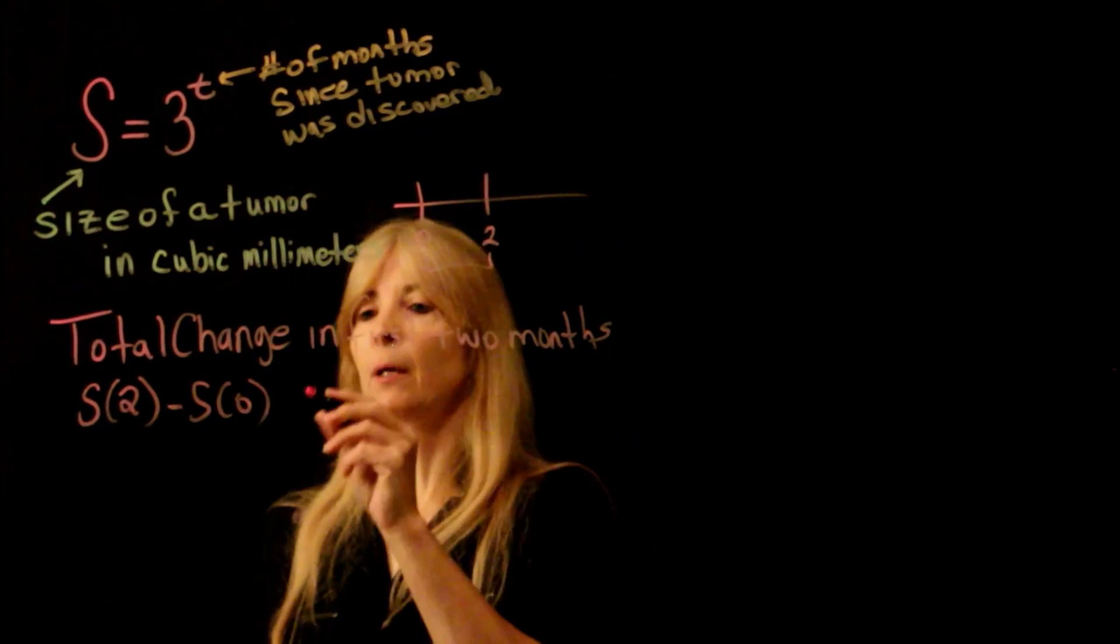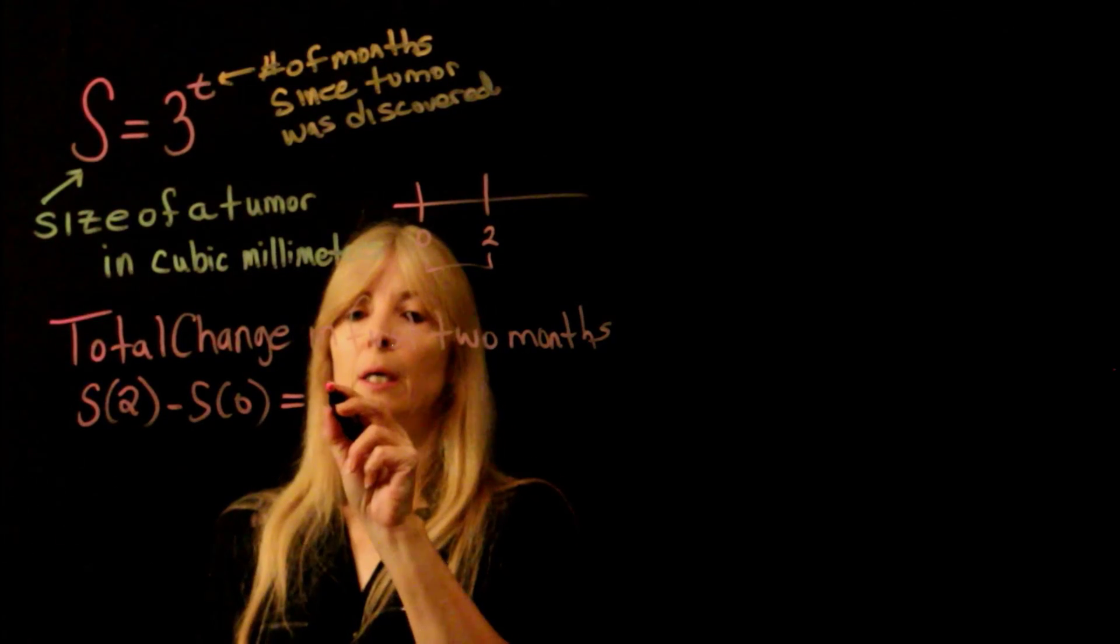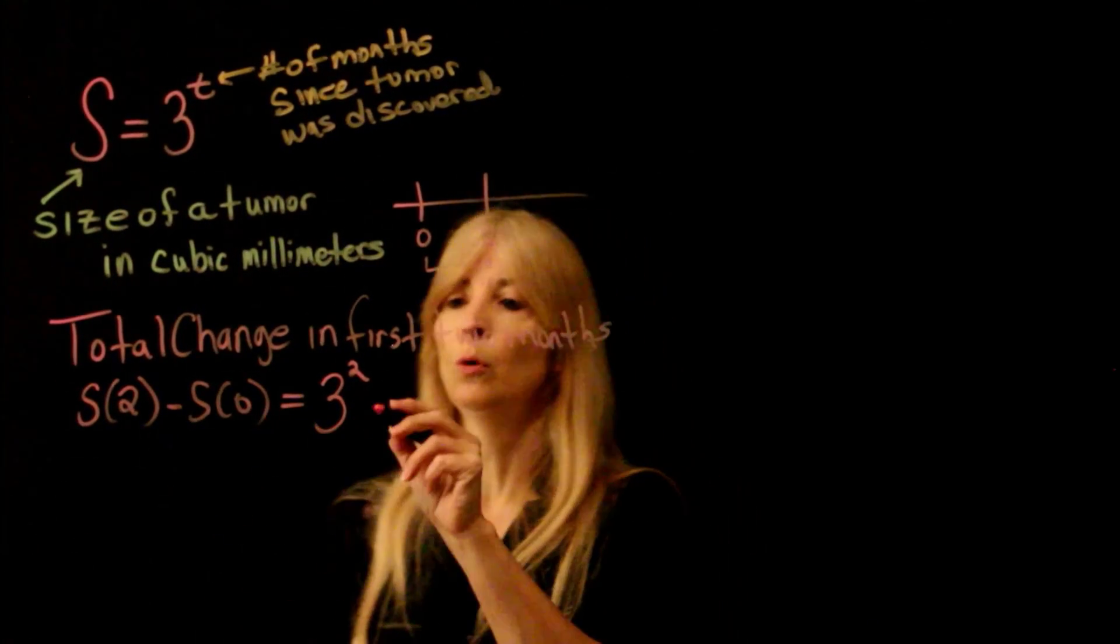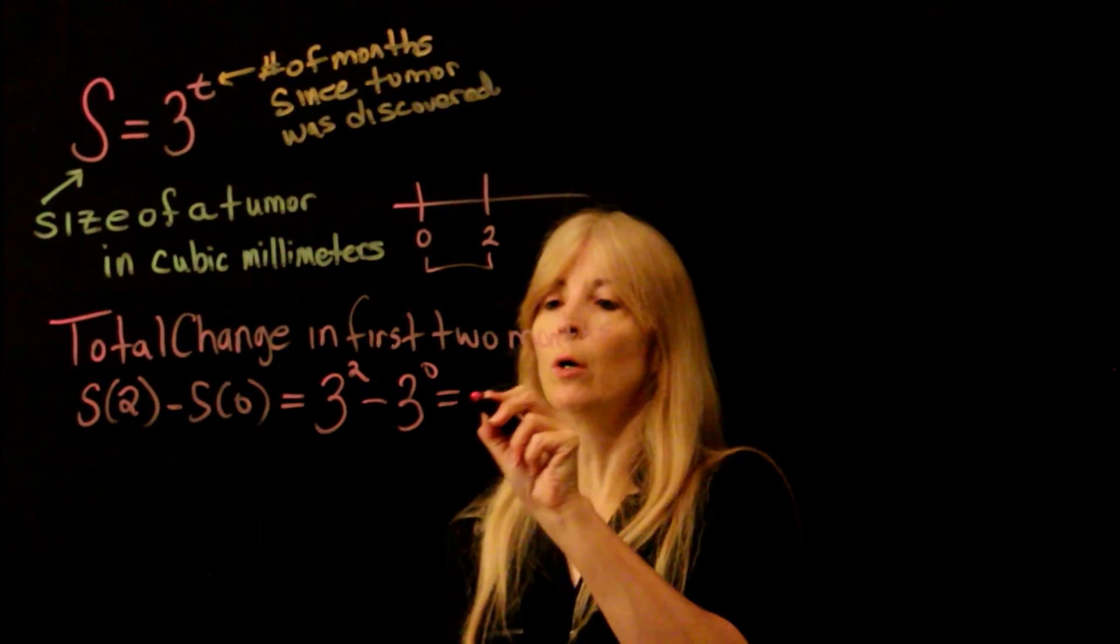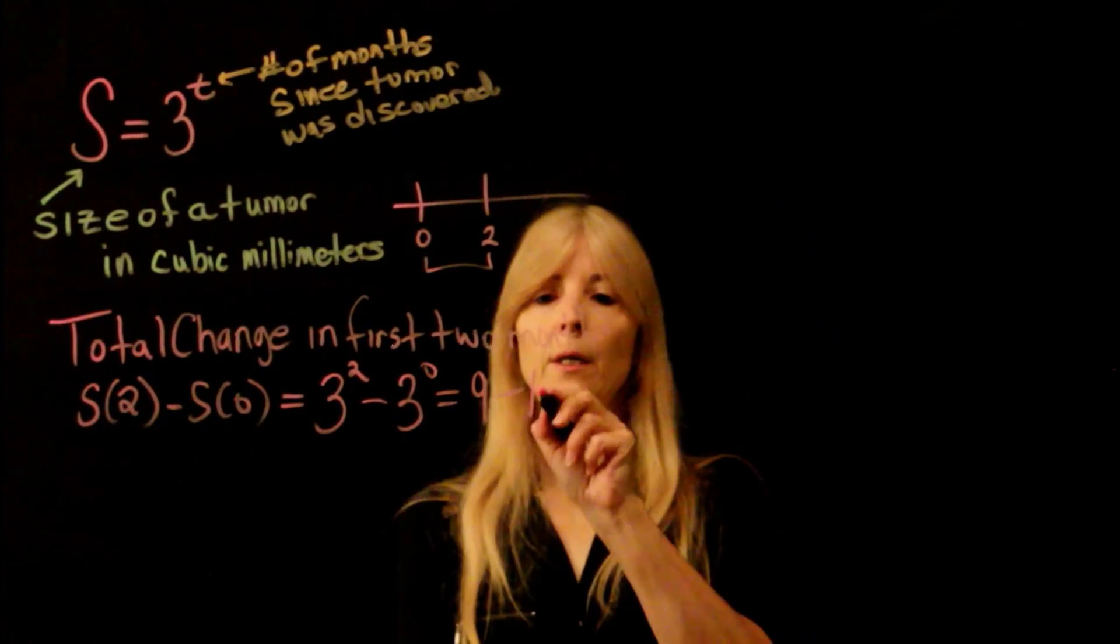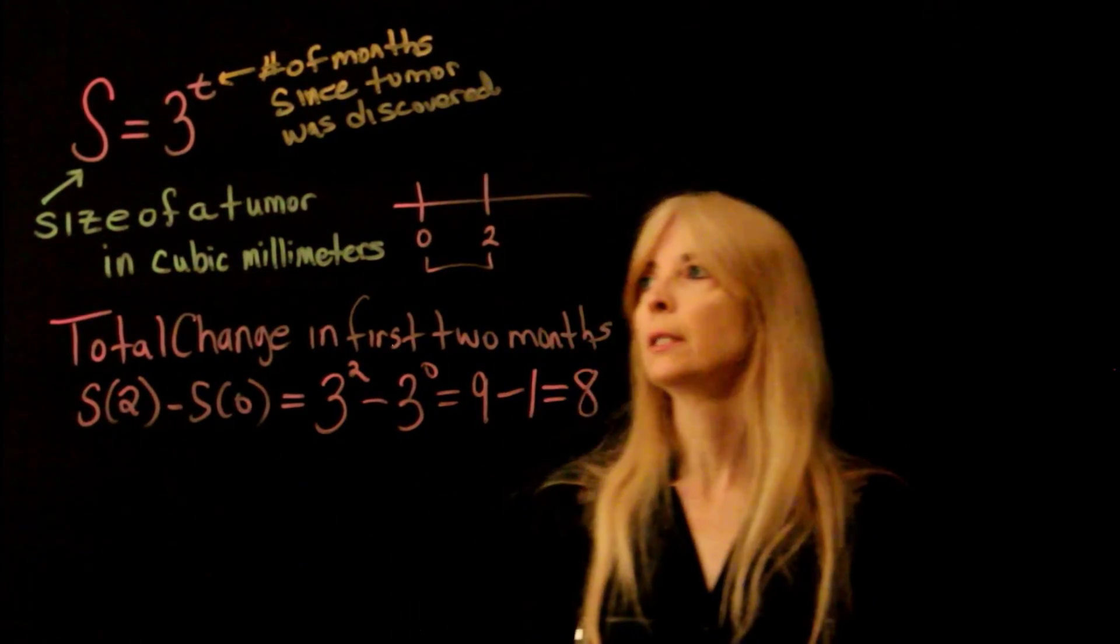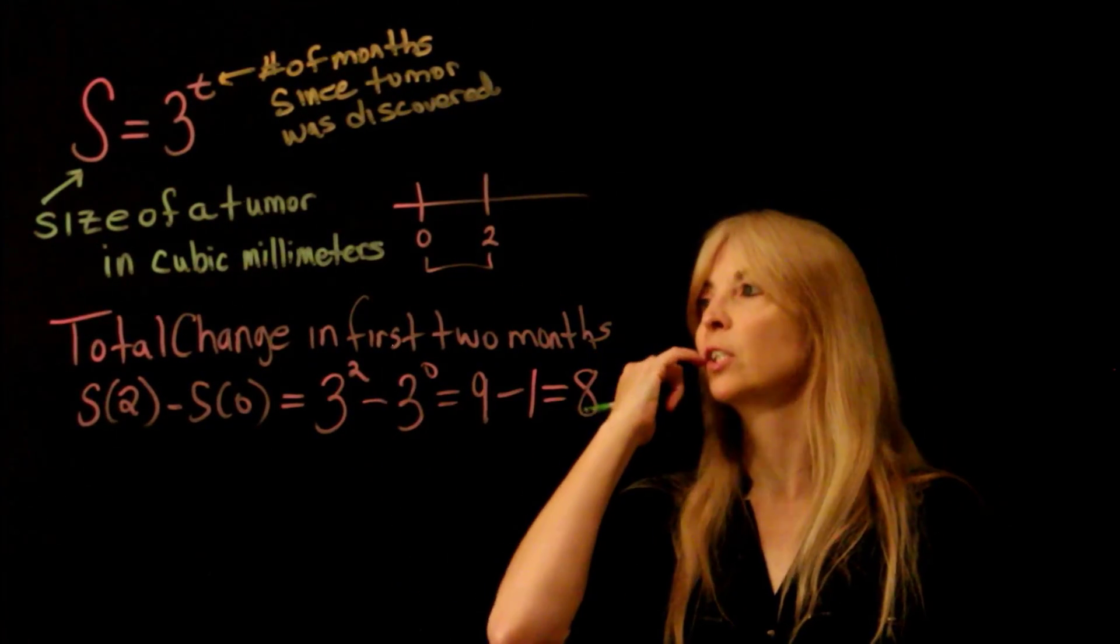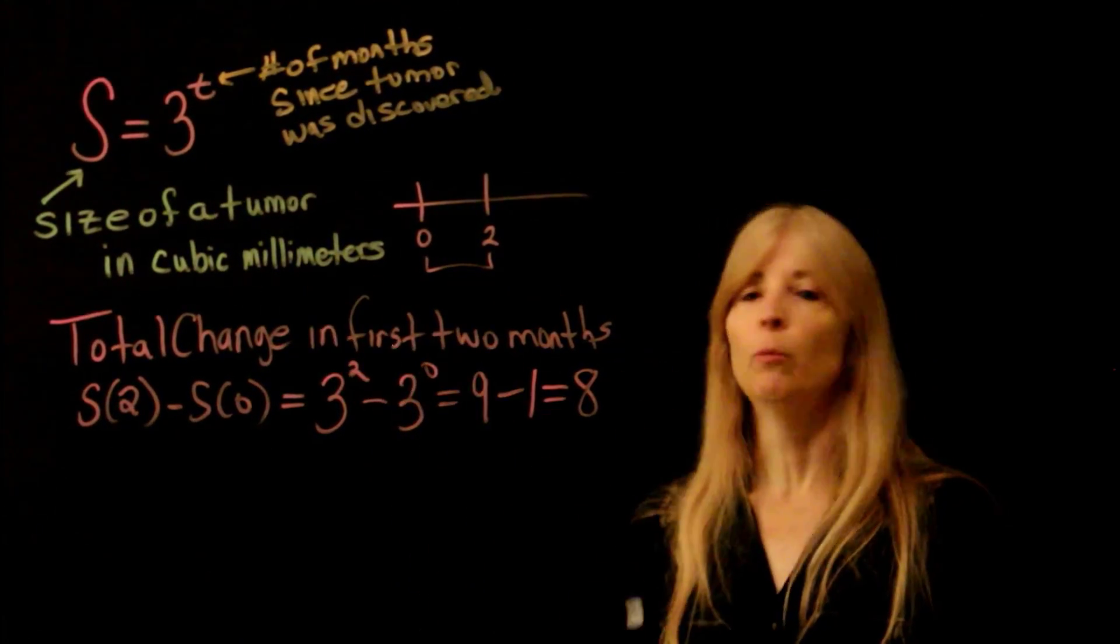And so I just simply plug those values in. So I plug in 3. Where I see a t, I plug in a 2. Where I see a t, I plug in a 0. Remember anything to the 0 power equals 1. And thus the total change in the first two months, because this is my function, would be 8 cubic millimeters.